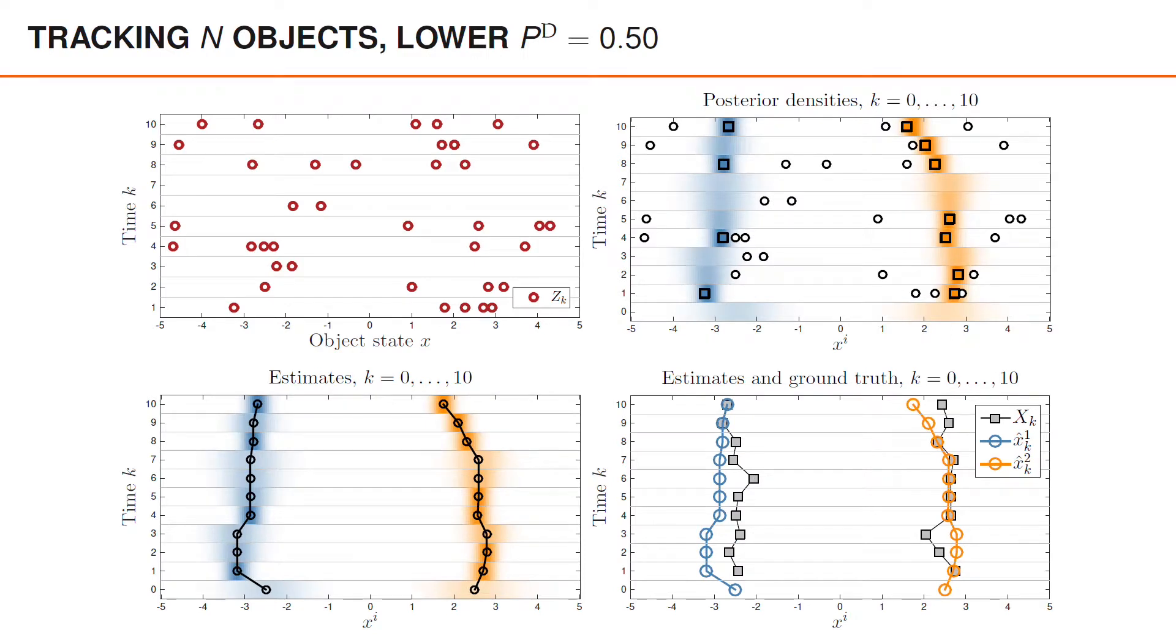In this slide, we show the same type of figures, but for a lower probability of detection. Before it was 0.85 and here it is 0.5. To make the comparison as easy as possible, we have the exact same underlying ground truth for the objects, the same clutter detections and the same measurement noise for the object detections. What is different is only the simulated detection process.